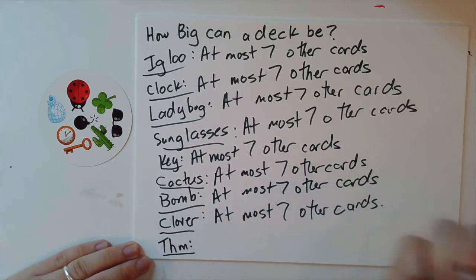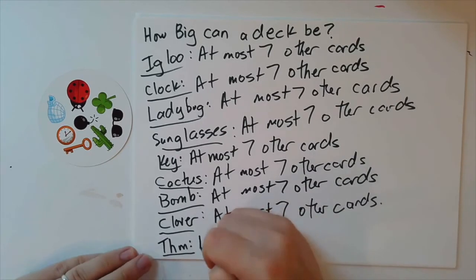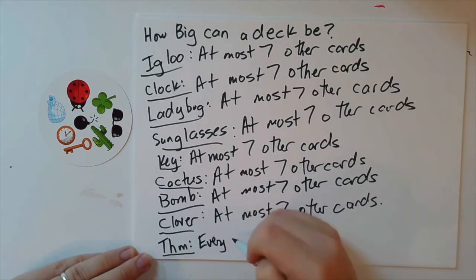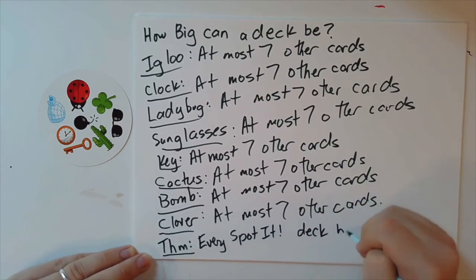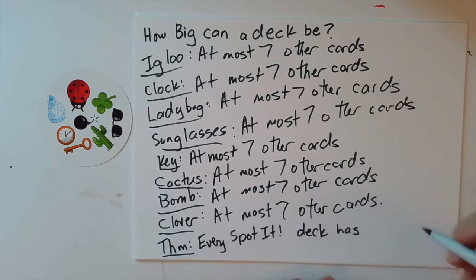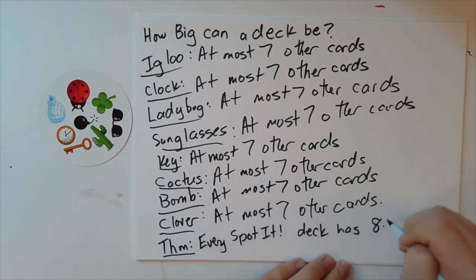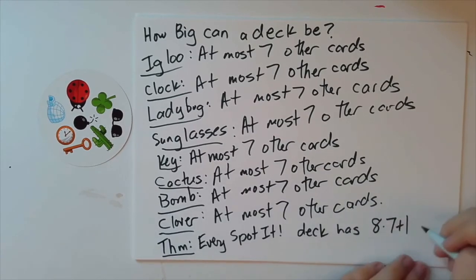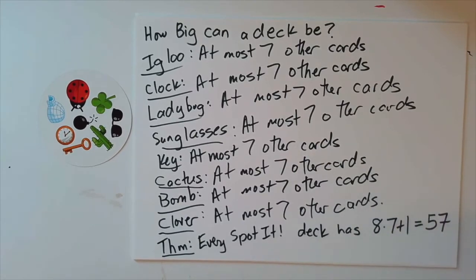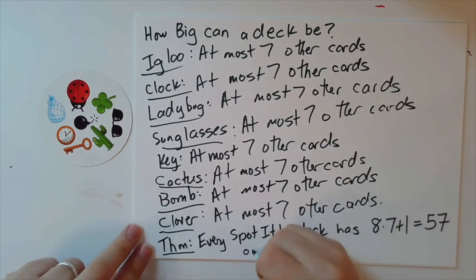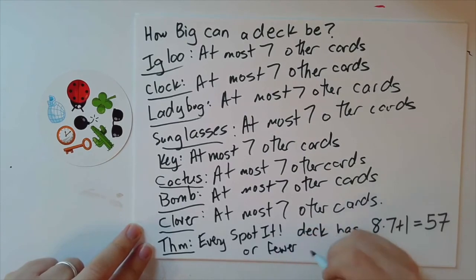So what we've actually proven now, I'll go ahead and call this a theorem, every Spotted deck has eight times seven plus one, which I'll go ahead and spare you multiplying, that's 57, or fewer cards.